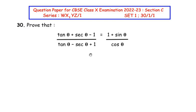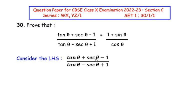We have to prove that the left hand side is equal to the right hand side, so we are going to start with the left hand side. We have tan θ + sec θ − 1 over tan θ − sec θ + 1.